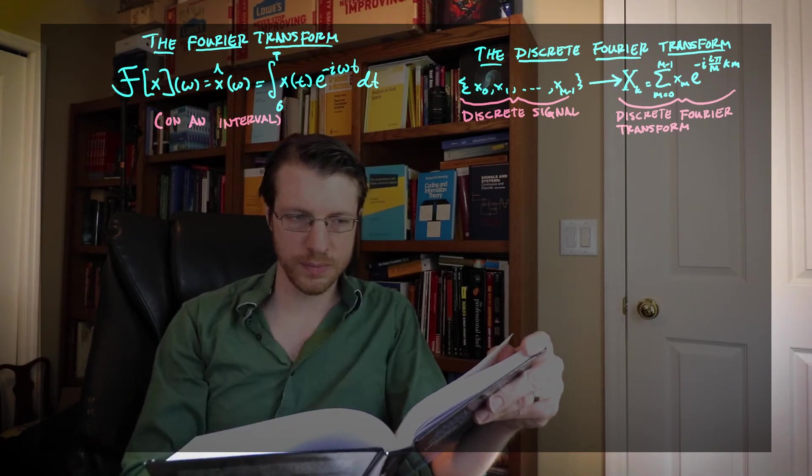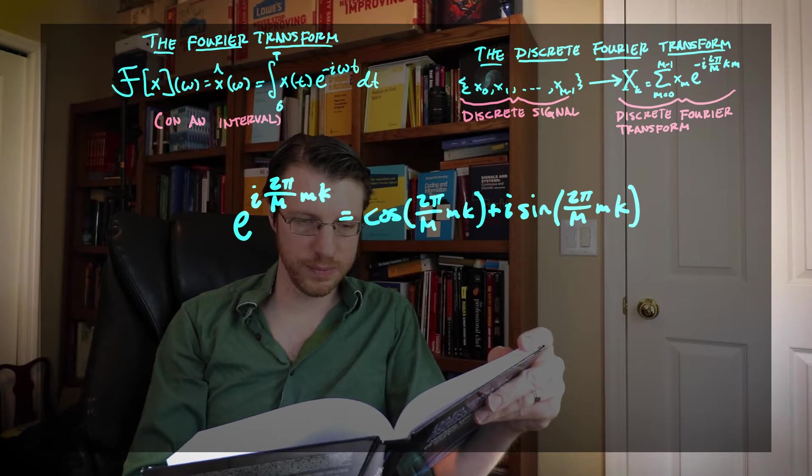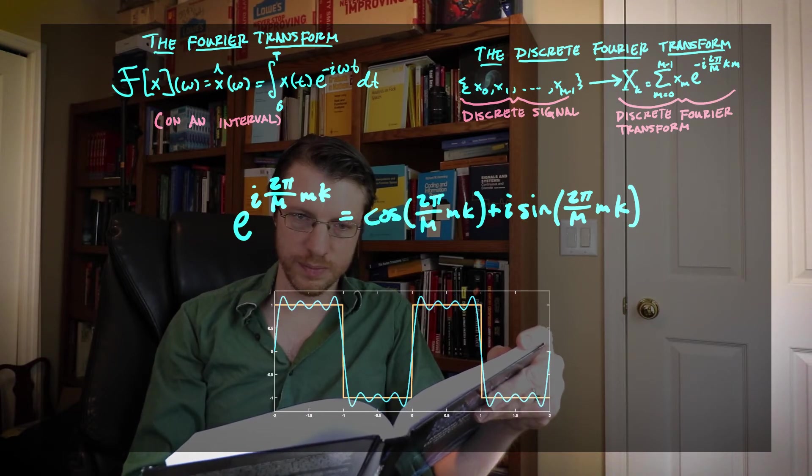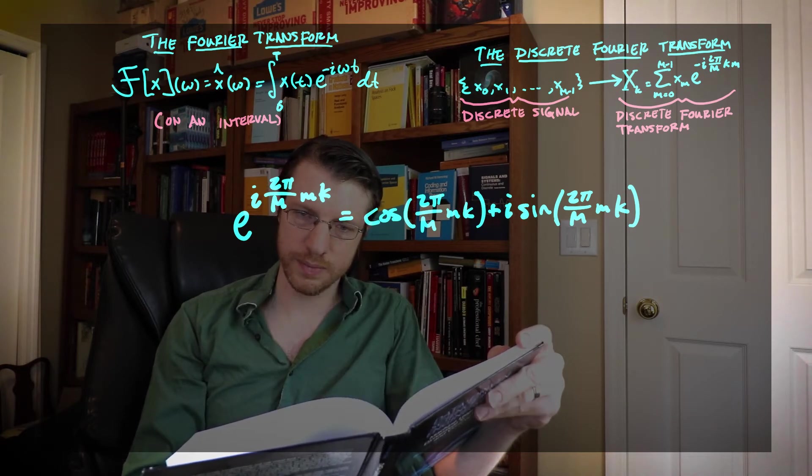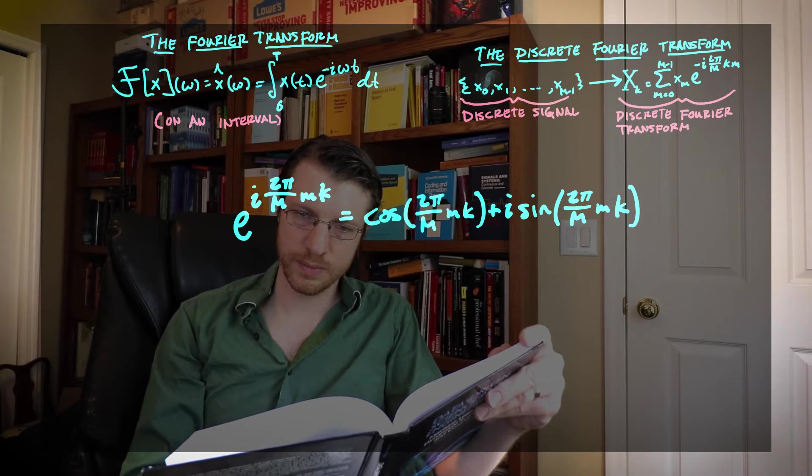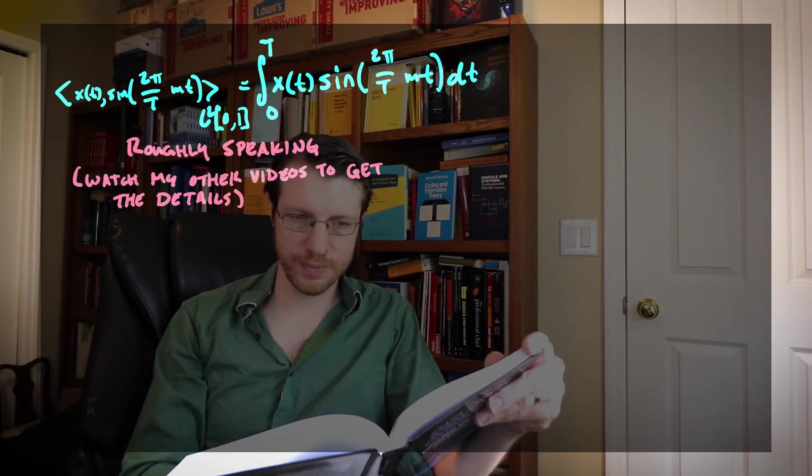The classical way of approaching any sort of signal processing is to take a time series or a signal and we want to break it down into its Fourier components. The Fourier components are all sinusoids. The Fourier transform uses an inner product.